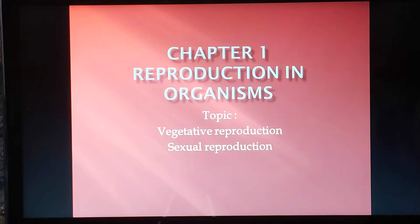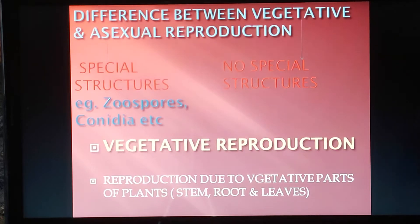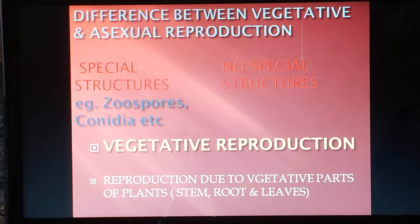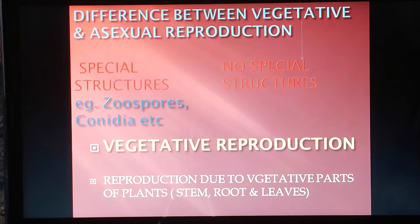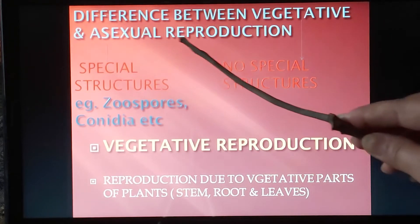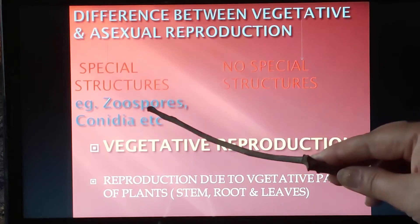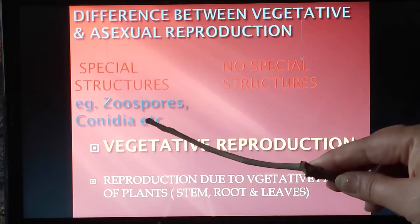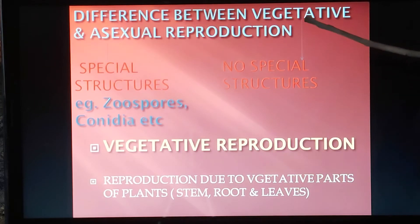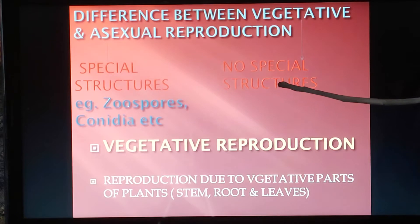Before we start, I want to clarify the difference between vegetative and asexual modes of reproduction, because normally people think that vegetative and asexual are one and the same thing. But actually these two terms are entirely different. Asexual means the organism produces some special structures like zoospores and conidia, as we discussed in our last lecture.